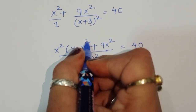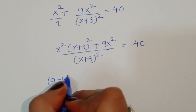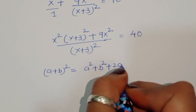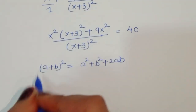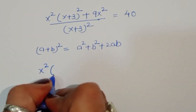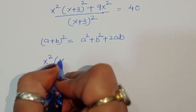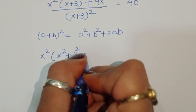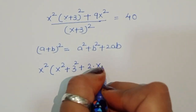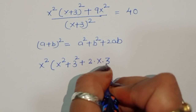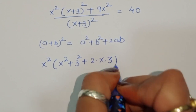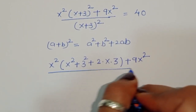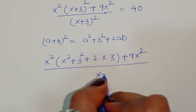Now expanding (x+3)² using the formula (a+b)² = a² + b² + 2ab, we get x² times (x² + 9 + 6x) plus 9x² all divided by (x+3)² equal to 40.